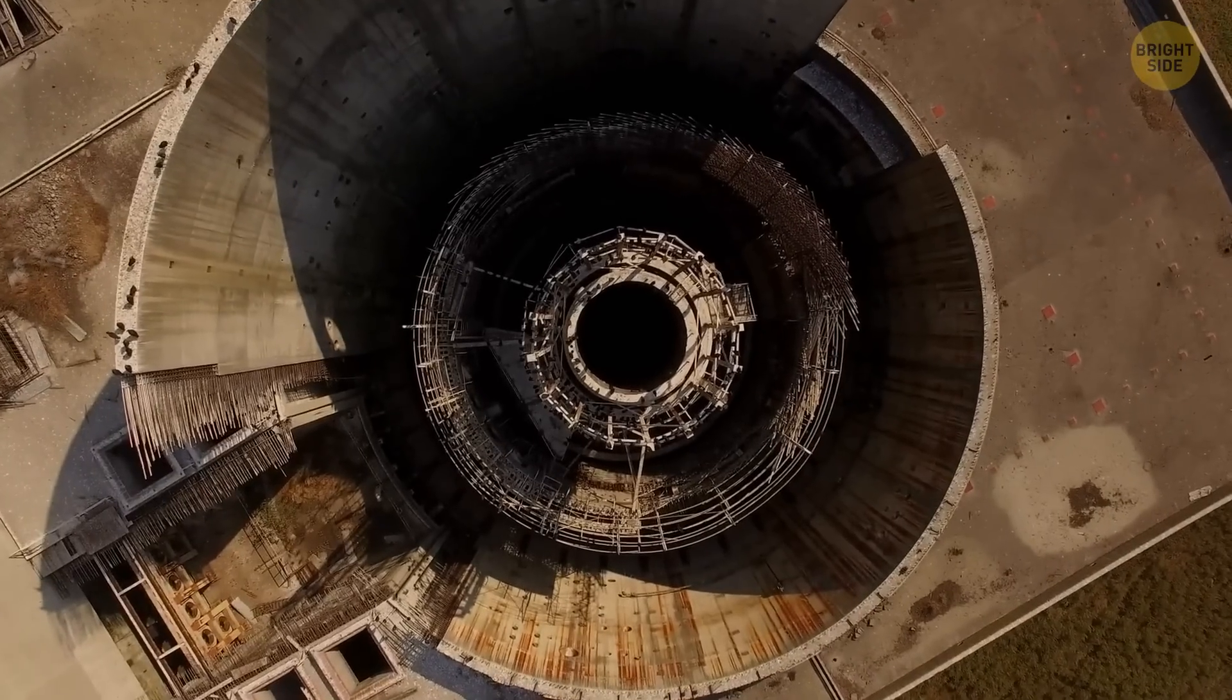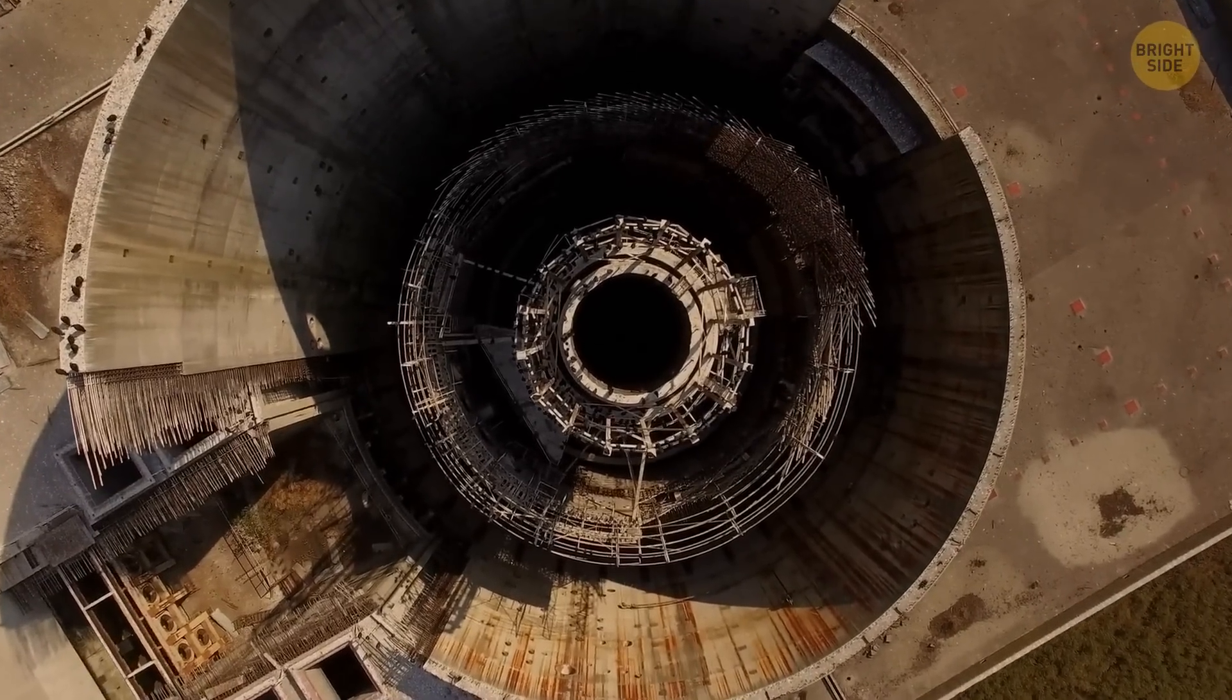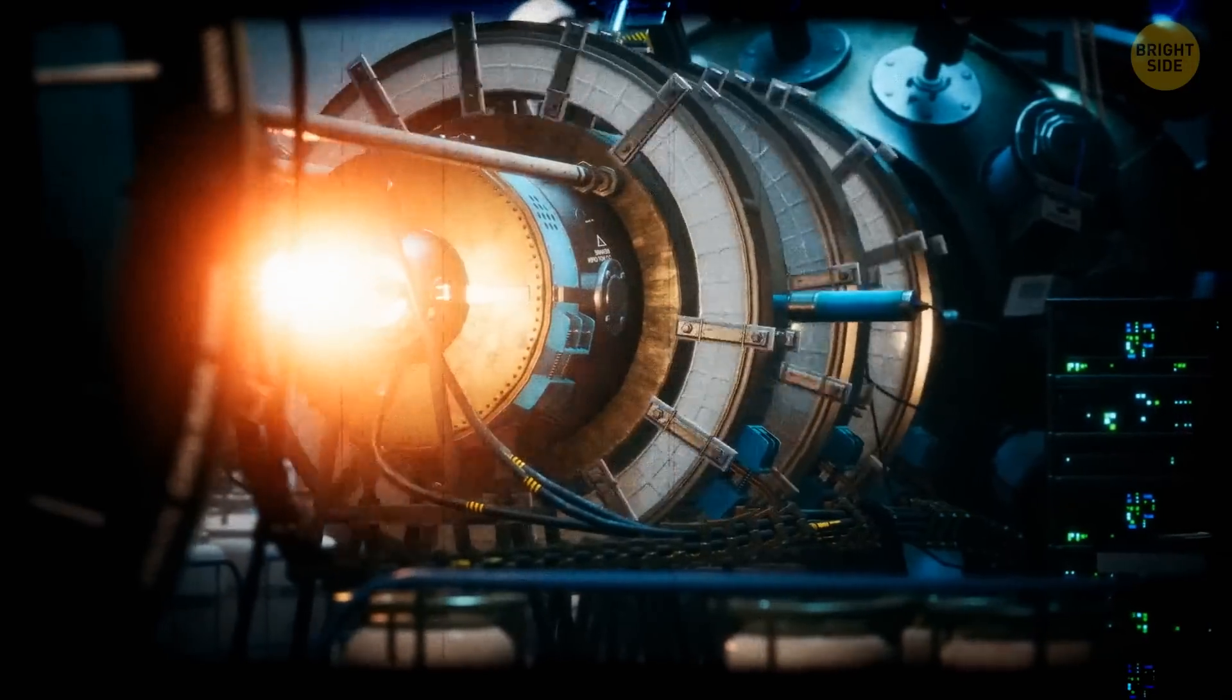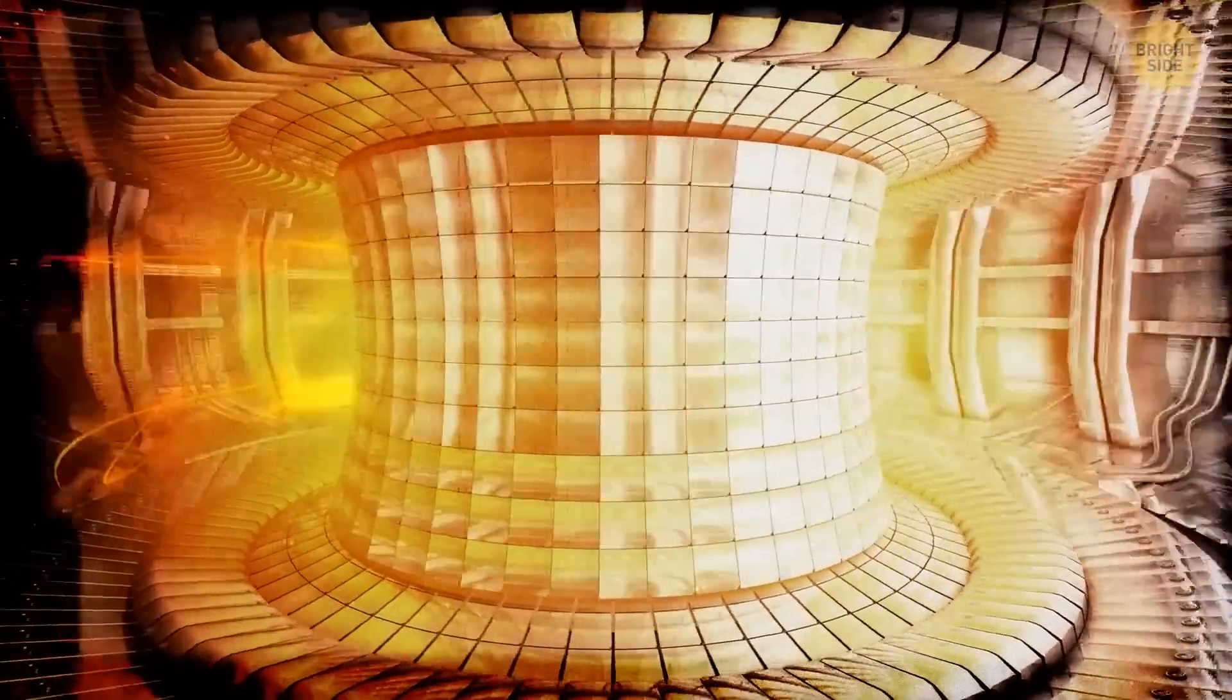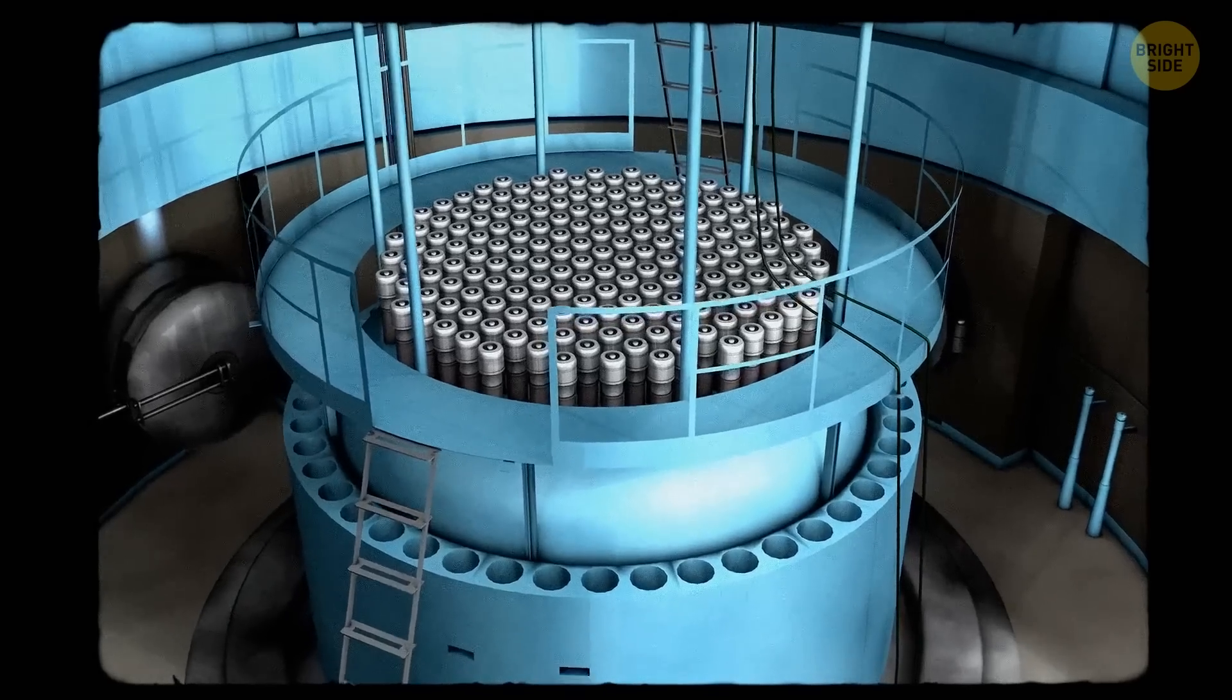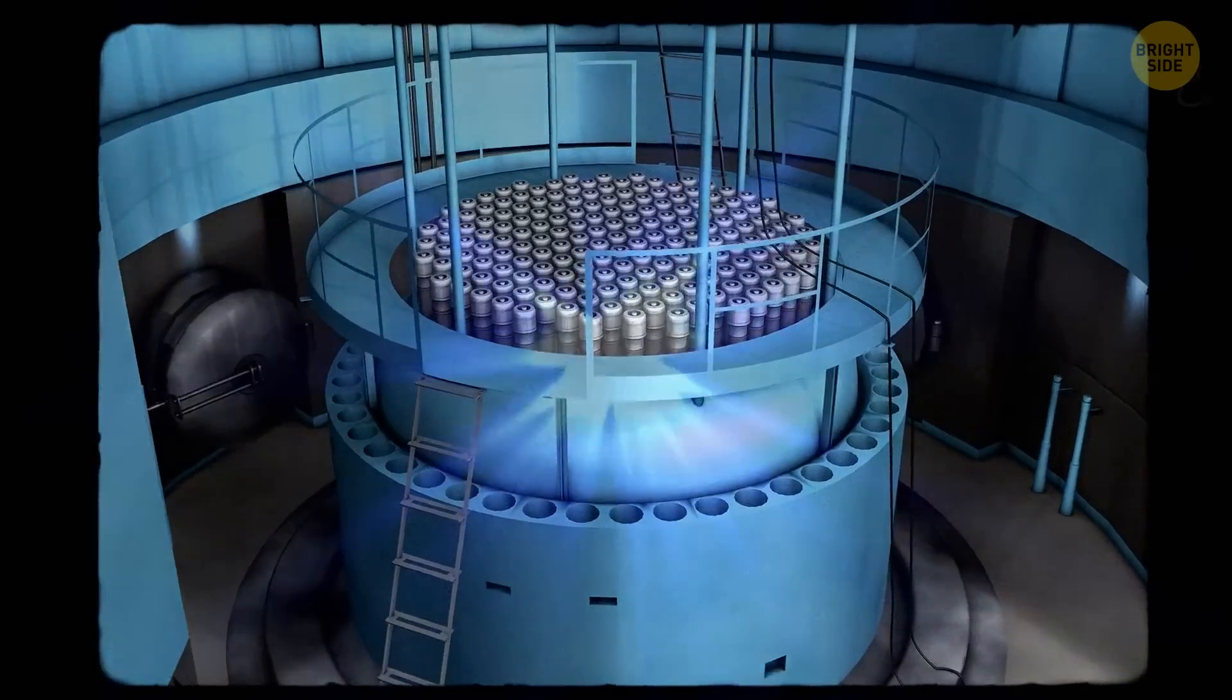In nuclear reactors, certain particles can reach very high speeds. If they're going through an insulating medium that slows the light down, they can move faster than the light that surrounds them. This creates a blue glow. That's why underwater cores of nuclear reactors can glow in the dark.